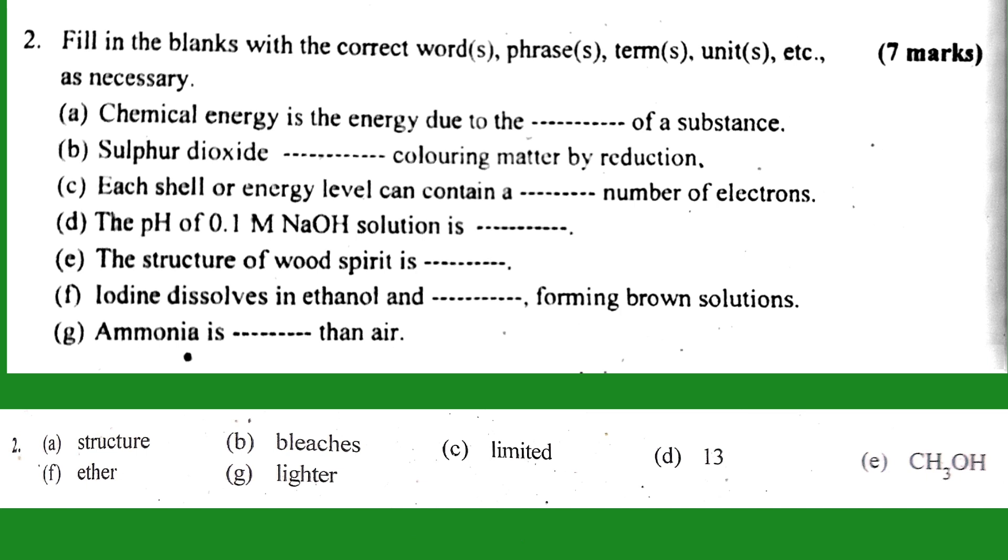Number two: fill in the blanks with the correct words, phrases, terms, units, etc. as necessary. Part A: chemical energy is the energy due to the structure of a substance. The answer is structure. Part B: sulfur dioxide has a bleaching property related to reduction. The answer is bleaches.